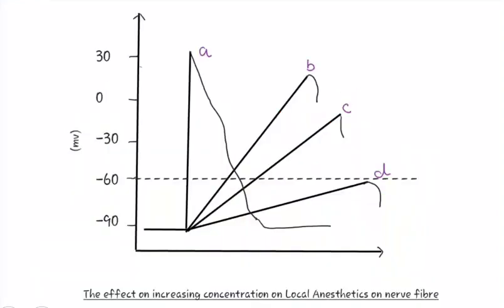Now from a graphical representation, let us study the effect of increasing concentration of local anesthetics on nerve fibers. Here we have taken four nerve fibers: A, B, C, and D.